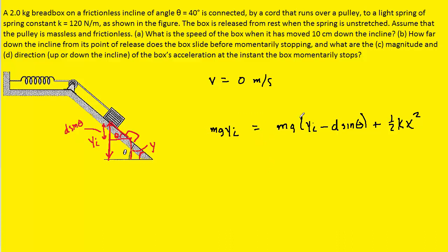We can once again distribute the mg. The mg yi terms will cancel out. We'll add the mg d sine theta over to the left-hand side. The value of x is the distance by which the spring is stretched, which is the same distance that the box slides down the ramp, so we can replace that with d. We can divide both sides by d so that it will cancel out on the left-hand side and then become just a d on the right-hand side. We can also multiply both sides by 2 so that the 2 cancels with the 1 half and then divide by k.